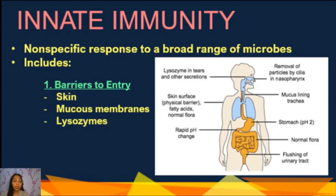First we have the barriers to entry. External barriers form the first line of defense. Physical barriers block pathogens and foreign substances from entering our body. Our skin has many functions — for example, calluses are thick scaly accumulations that protect the skin from disease-causing organisms and abrasions. Other physical barriers include the mucus that traps inhaled dust particles in the nose and wax in our ears.